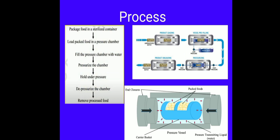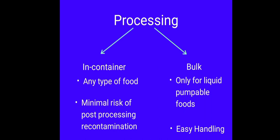Now, there are two types of processing when it comes to HPP. Number one is in-container processing and second is bulk processing. In-container processing allows the usage of any type of food. And since we are using the processing after the food has already been packaged, there is minimal risk of post-processing recontamination. Whereas in bulk processing, we can only use pumpable foods or liquids, and the handling is comparatively easy in bulk processing.